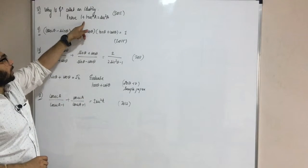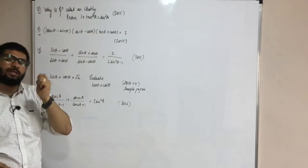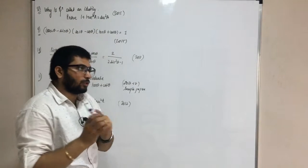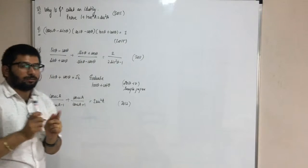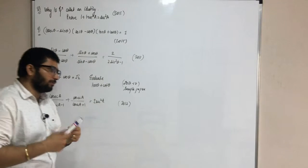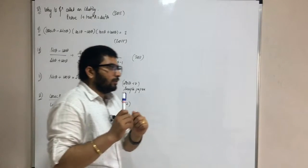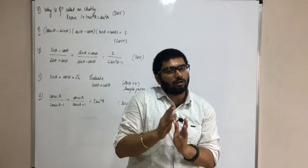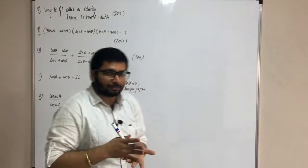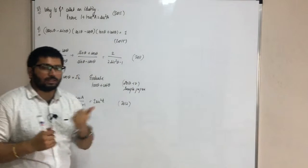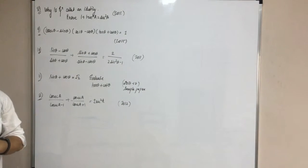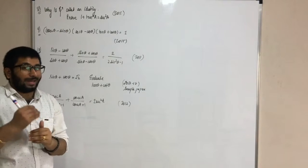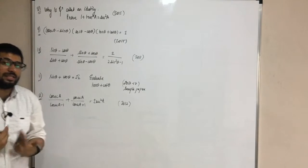Proof that 1 plus tan squared A equals sec squared A — that question is also asked, and we have done it. You will check it back. Geometrically, you have to find out the value of sin of 60 degrees. We have done that question. So these are proof-type questions which they are asking.